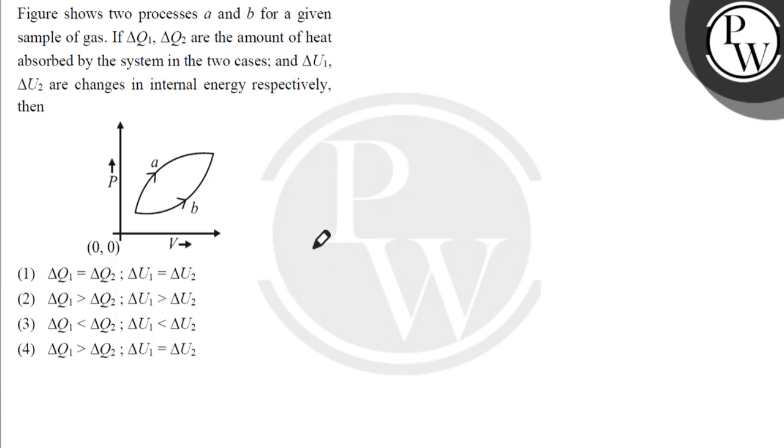Hello, let's read the question. The question says the figure shows two processes a and b for a given sample of gas. If ΔQ1 and ΔQ2 are the amount of heat absorbed by the system in the two cases, and ΔU1 and ΔU2 are the changes in internal energy respectively, then...